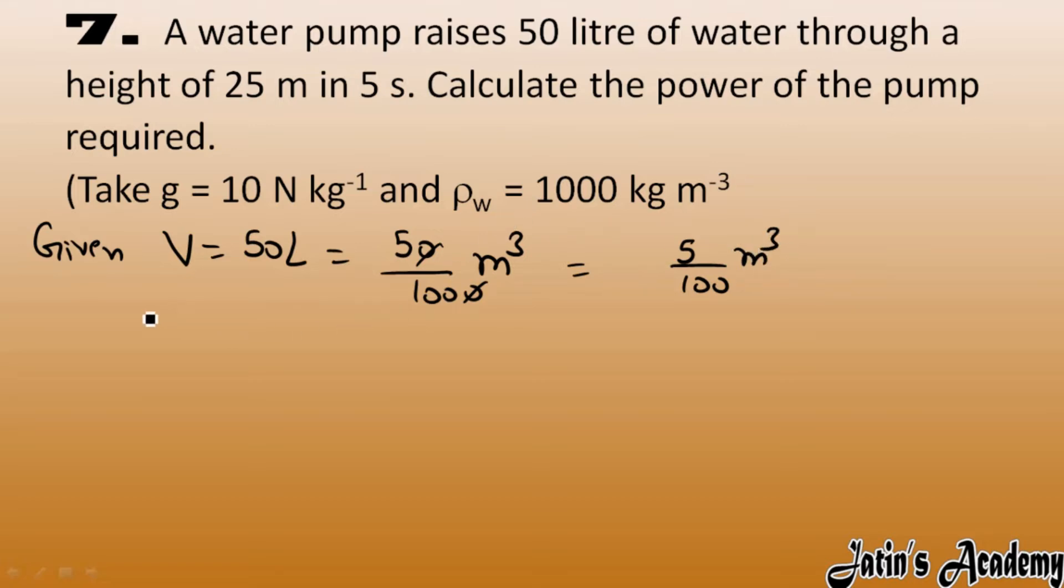Now we have to calculate mass. We know the formula density equals mass per unit volume. So mass equals density into volume. Density value we have 1000. Volume in SI unit we have 5 by 100. So from here we got 50 kg. So 50 kg we got the mass of the water.